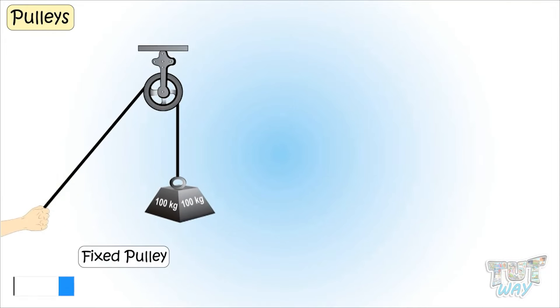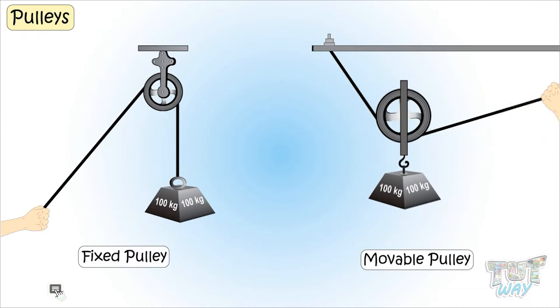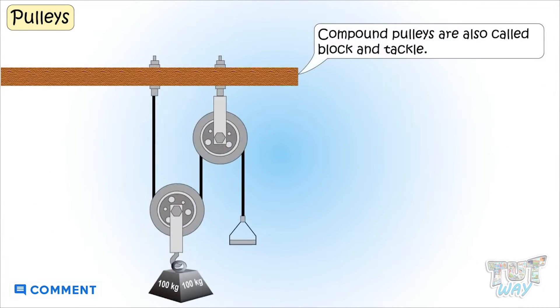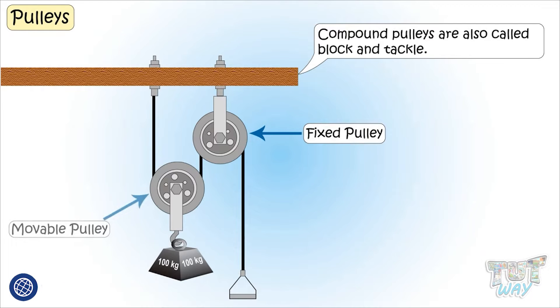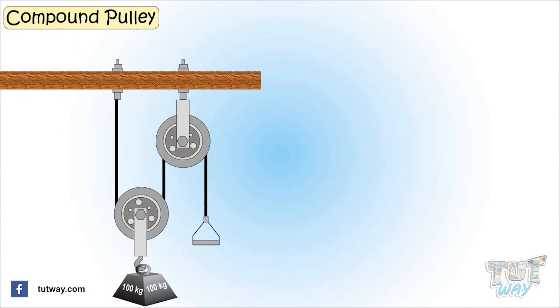We now already know what are pulleys and that pulleys can be fixed or movable. Compound pulleys are called block and tackle and is a combination of one or more movable pulleys. Now let's learn more about compound pulleys and mechanical advantage they offer.